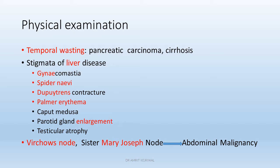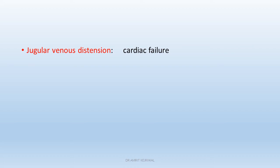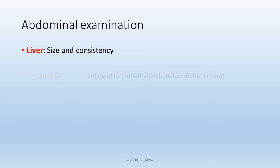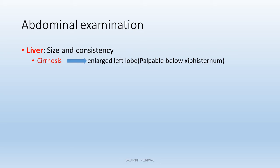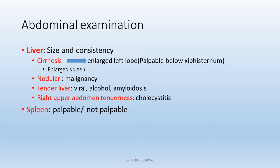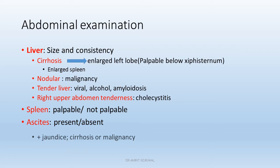If the patient has Virchow's nodes, think of abdominal malignancy. If the patient has jugular venous distension, think of cardiac failure as the cause for hyperbilirubinemia. Right-sided pleural effusion probably suggests advanced cirrhosis. On abdominal examination, check the liver for size and consistency. In cirrhosis, the enlarged left lobe is palpable below the xiphisternum, possibly with an enlarged spleen. A nodular liver suggests malignancy; a tender liver suggests viral, alcoholic, or amyloid hepatitis. Right upper quadrant tenderness is suggestive of cholecystitis. Check for splenomegaly, and note whether ascites is present or absent — ascites may be seen with jaundice, cirrhosis, or malignancy, or may be absent despite these conditions.